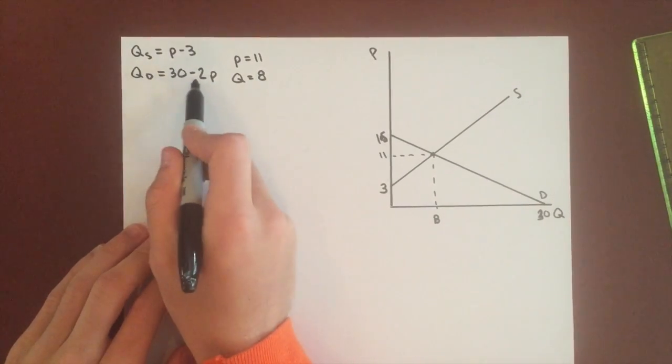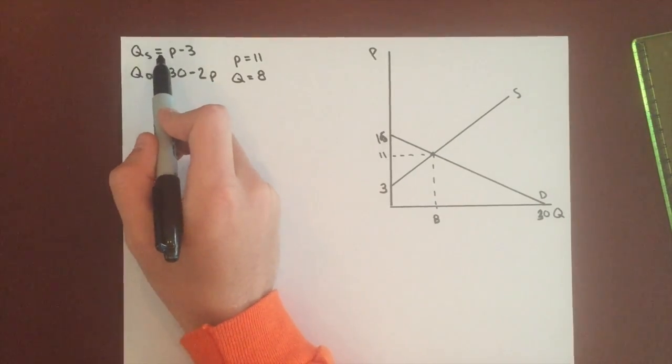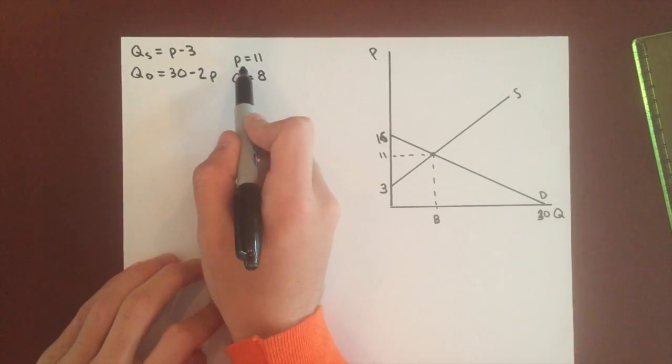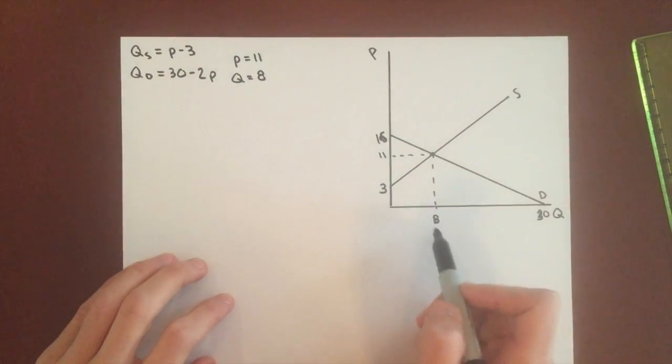We have the demand curve here, the equation for the demand curve, and the equation for the supply curve. And in equilibrium, without the price ceiling, we have price equals 11 and quantity equals 8.